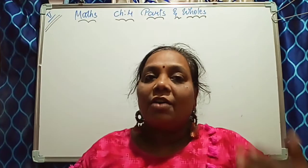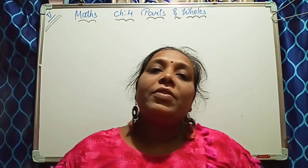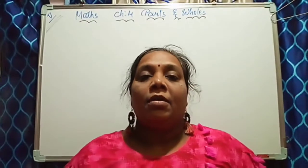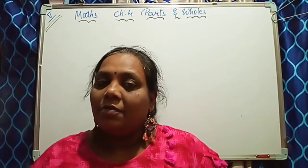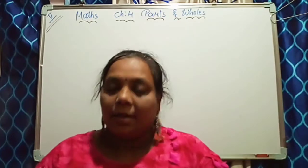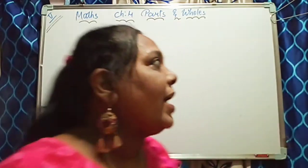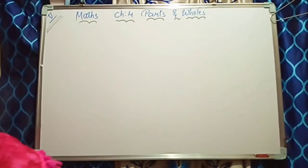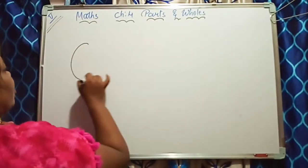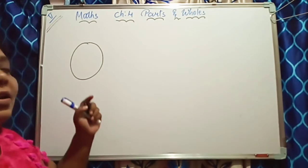If you skip parts of the video you won't get the full picture, so watch the full video and you will get everything. It is a very simple method. So first, with the example — if it is a circle, I draw a circle. This is a circle.